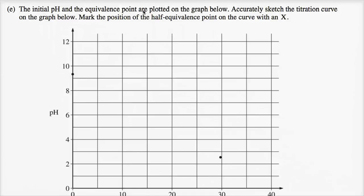The initial pH and the equivalence point are plotted on the graph below. Accurately sketch the titration curve on the graph below. Mark the position of the half equivalence point on the curve with an X.